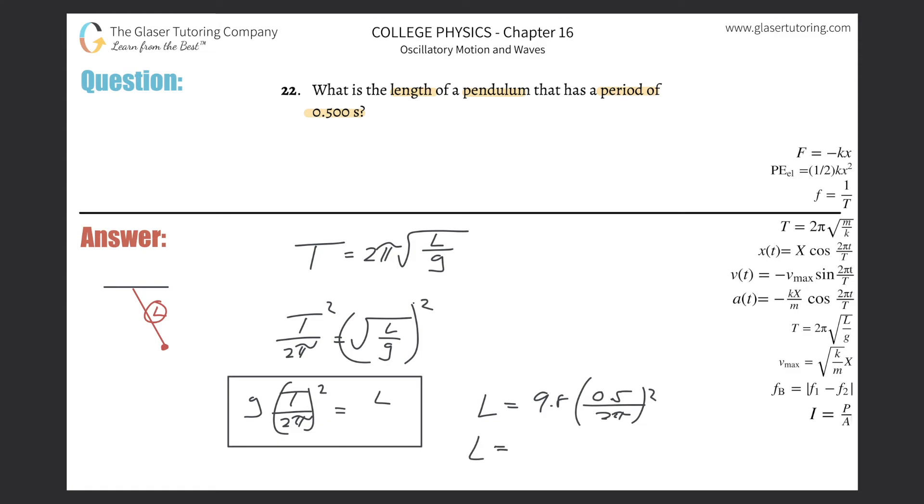So this is now going to be 9.8 times parenthesis 0.5 divided by parenthesis 2π, close those parentheses, square it, and the length is going to be 0.0621 or so. And that is in meters. That's the length. And that's it.